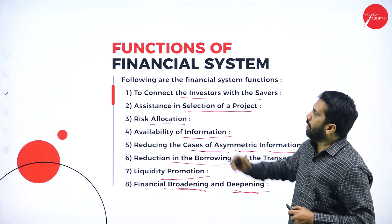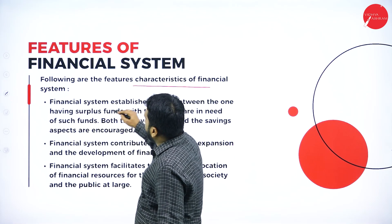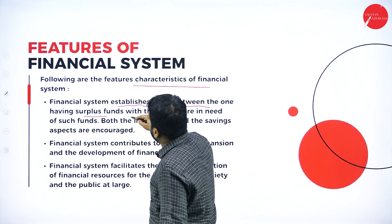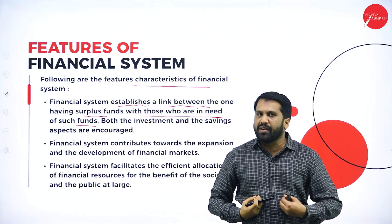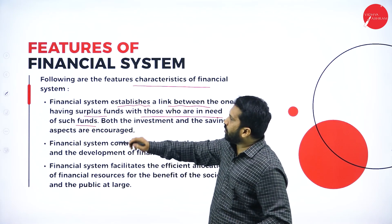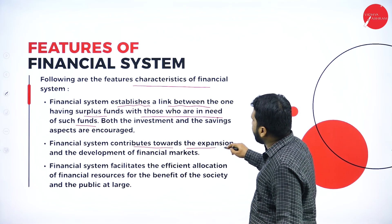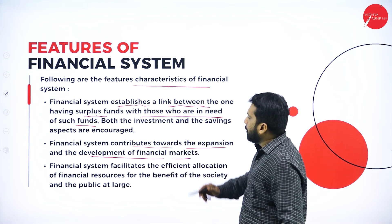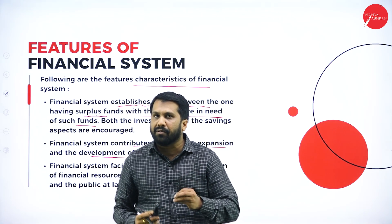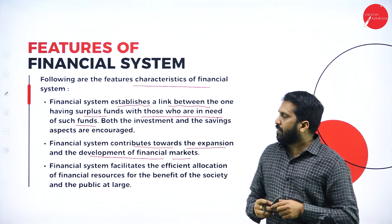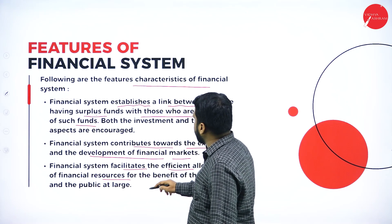Now, the features or characteristics of the financial system: First, the financial system establishes a link between those having surplus funds and those in need of funds. For example, banks have surplus — we go to the bank and apply for a loan — creating a connection. Second, the financial system contributes towards the expansion and development of the financial market. Earlier there were very few banks in a city; now every area and road has a small bank — that is expansion and development.